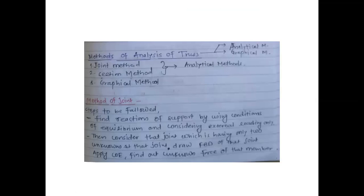There are two methods of analysis of truss: graphical and analytical. Previously, the graphical method was also used — by using a drafter and drawing to scale, we were able to find out the magnitude of force in members. But right now, only the analytical method is there for our study purpose. There are two types of analytical methods: joint method and section method.